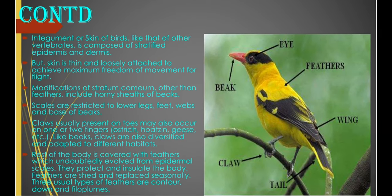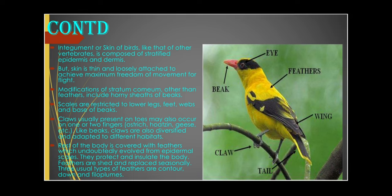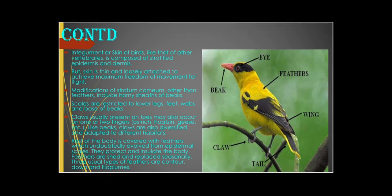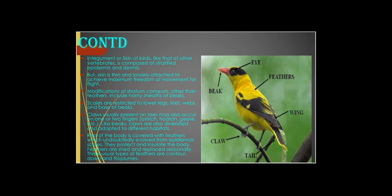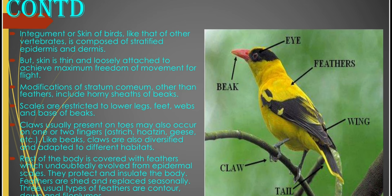You have modifications of the stratum corneum. Other than the feathers, you also have horny sheaths of the beaks. Scales are restricted to the lower legs, feet, webs, and bases of the beaks. The birds also have claws, which are usually present on the toes. The claws may also occur on one or two fingers, like you can see in the ostrich and the geese. Like the beaks, claws are also diversified and adapted to different habitats.